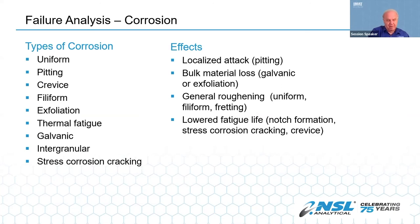Corrosion is a large topic and many people and organizations devote their whole careers to it. In analyzing a failure, most of the time being able to recognize visually the different types of corrosion is the first step. The mode of failure can be a combination of corrosion and something else, like erosion, fatigue, or overload. As an analyst, all you can visually see is the result of the corrosion. The corrosion types include uniform, pitting, crevice, filiform, exfoliation, and others — and their effects: localized attack by pitting, bulk material loss by galvanic or exfoliation, surface roughening, uniform or filiform threading, and lowered fatigue life such as from notch formation, stress corrosion cracking, or crevice corrosion.